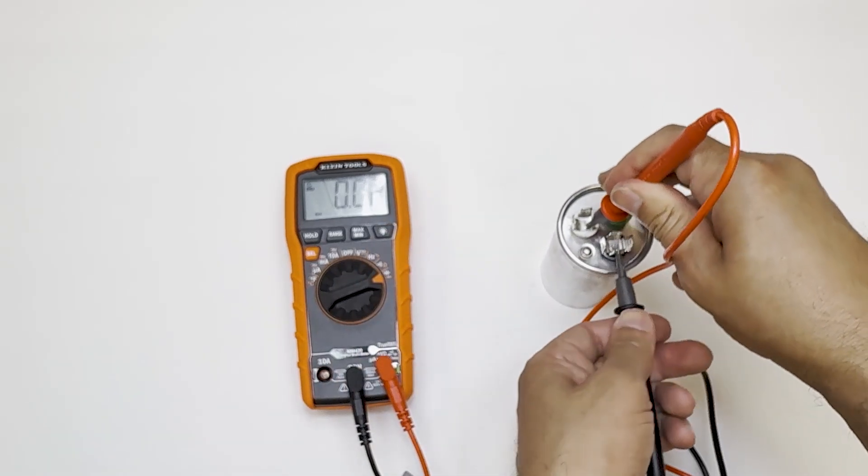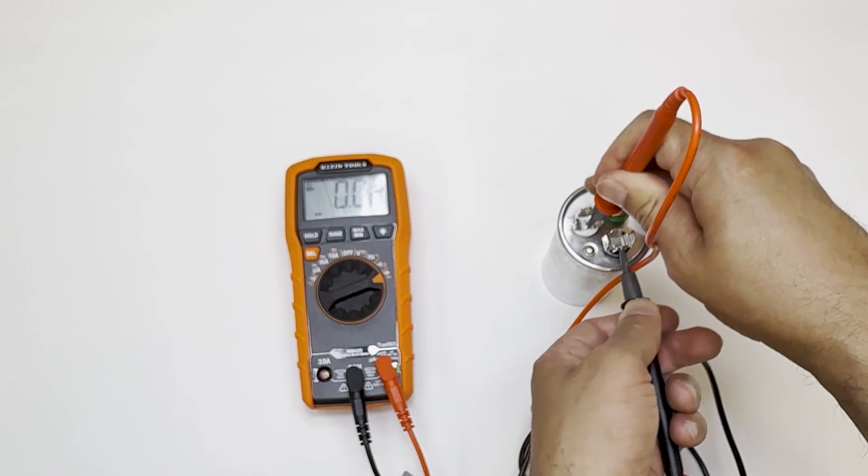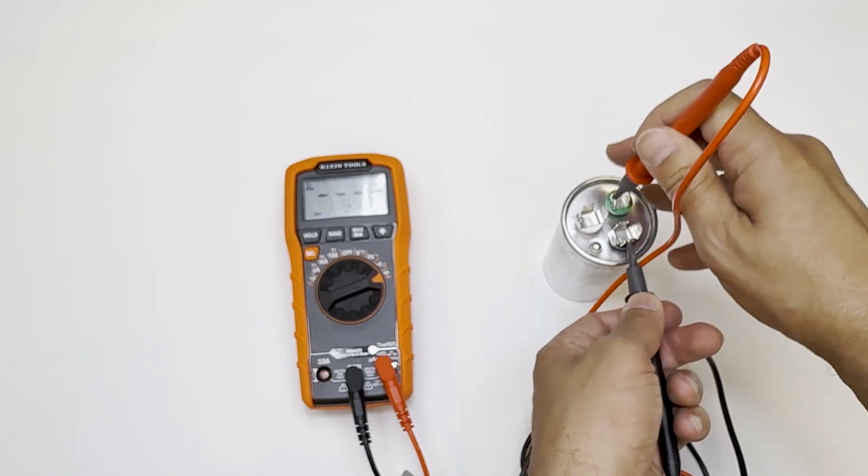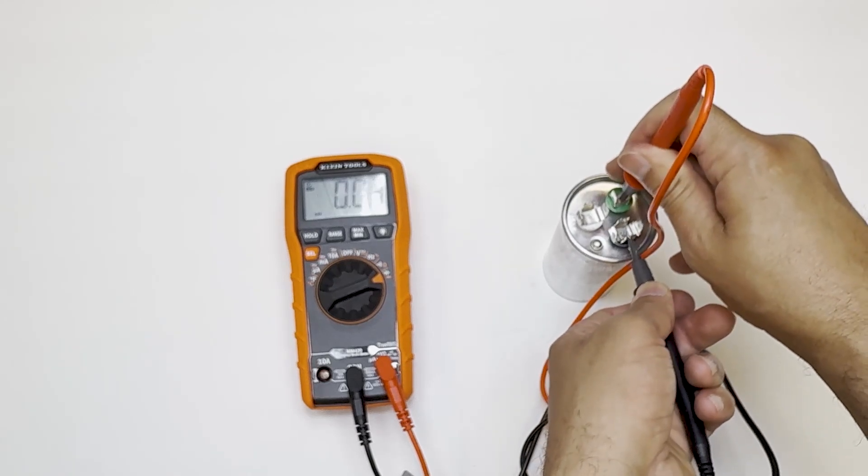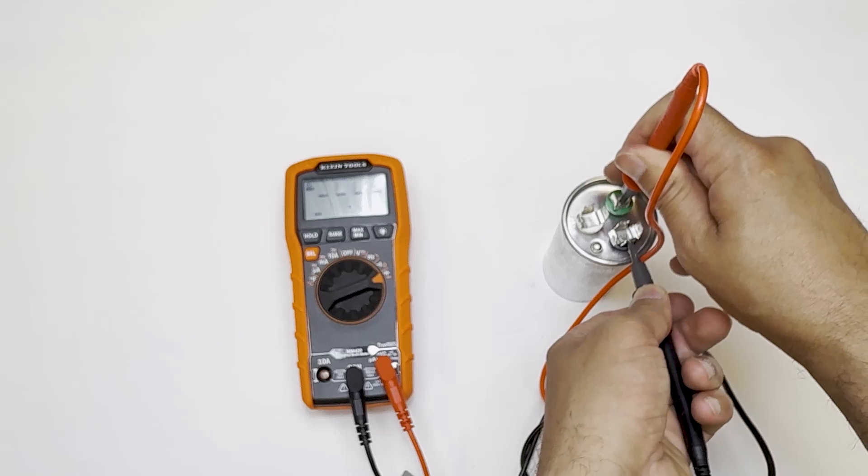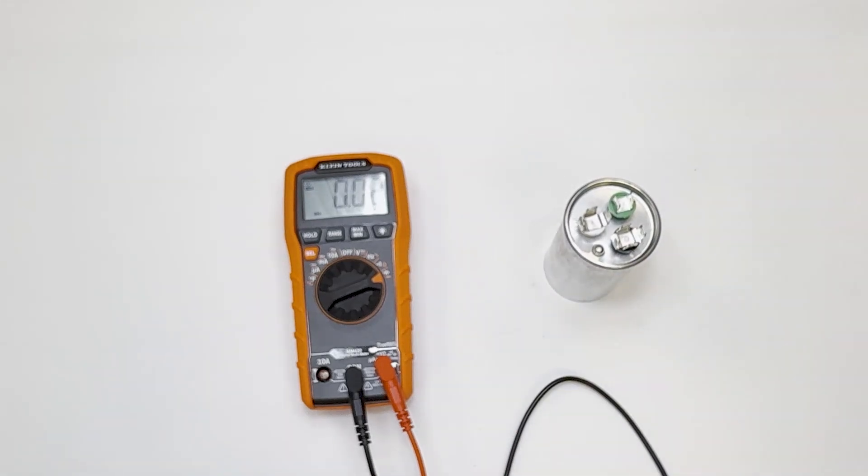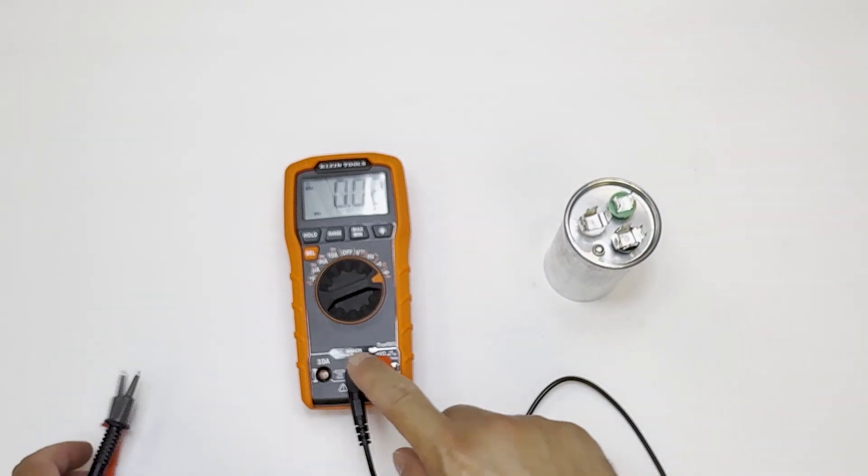So now you know how to test a dual run capacitor with both types of multimeters. If one side's not working, it's time for a replacement. And if you want to see us actually swap out ours, check out our video on replacing the capacitor. Thanks for watching, and have a great day.